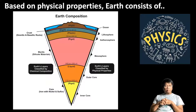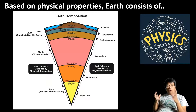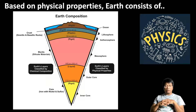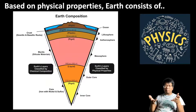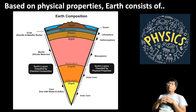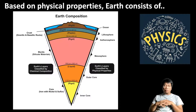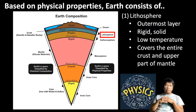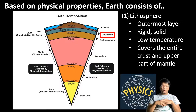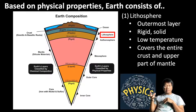Now let's talk about the second criteria. Based on their physical properties, we can actually divide the Earth into several layers. When I say physical properties, I really mean whether these layers are solid or liquid, whether they have high or low temperature, or whether they are able to flow or not — we're really talking about the physical behavior of these layers. The first layer based on physical properties is the lithosphere.